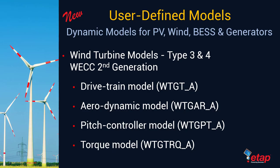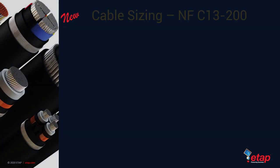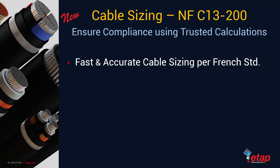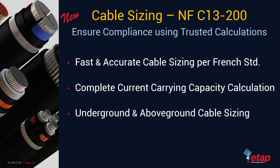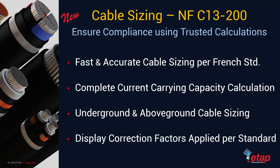Wind turbine models for Type 3 and Type 4 are based on WECC 2nd generation and have been added as part of ETAP20 release, including the drivetrain model, aerodynamic model, pitch controller model, and torque model for the wind turbines. We've also added a brand new cable sizing module in ETAP20 for fast and accurate cable sizing per French standard NFC 13-200. You can perform complete current carrying capacity calculation for underground and above ground cable sizing, and it allows you to display correction factors applied per the cable standard. On batch cable sizing, you can see all correction factors being applied to all conductors in a single tabular fashion, allowing you to produce a compliance table showing how cable sizing was performed and what derating factors were applied.